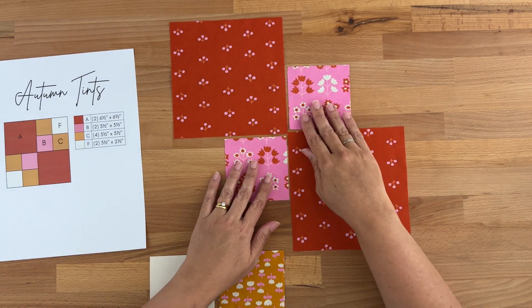And my F pieces. Now if you're using directional fabric just make sure it's all sitting how you'd like it to sit at this point before we sew our pieces together.